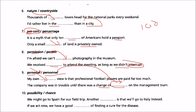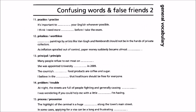Possibility and chance: we might go to Spain for our field trip. Another possibility is that we will go to Italy instead. If we act now, we have a good chance of finding a cure for the disease. These are confusing words and false friends.